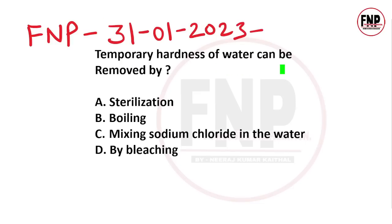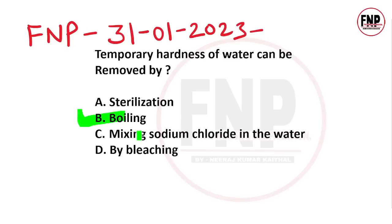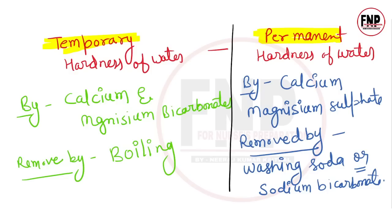Temporary hardness of water can be removed by which method? Options: sterilization, boiling, mixing sodium chloride in water, or bleaching. The right answer is option B, boiling. Temporary hardness ko boiling ke dwarah remove kiya ja sakta hai.